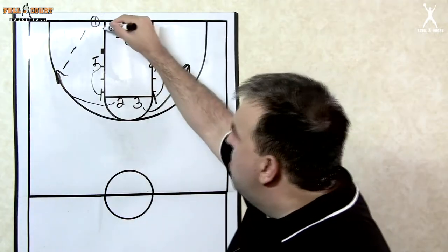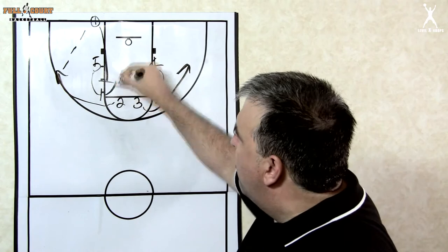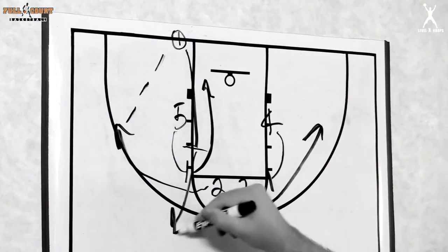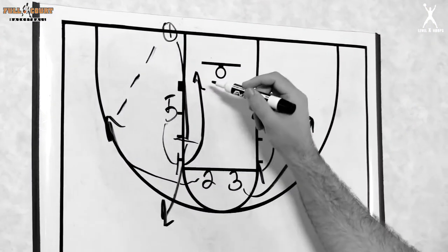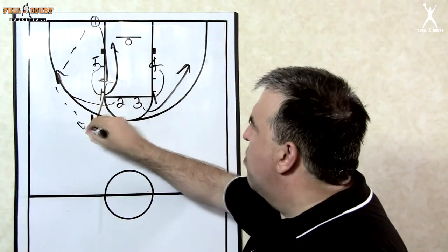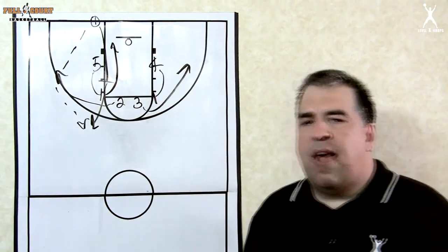On that pass, one immediately will sprint in and set a back pick for five. So five now rolls to the basket and one steps out. Obviously, if you can hit five going to the basket, you can do so. But if you reverse it to one, we're going to set up a ball screen at the top of the key.